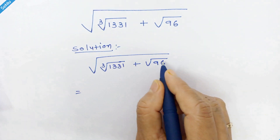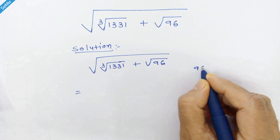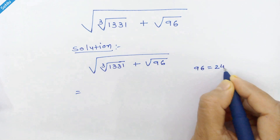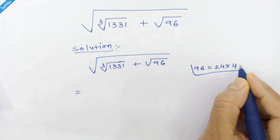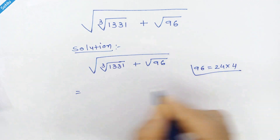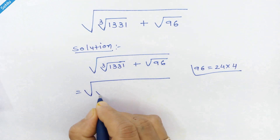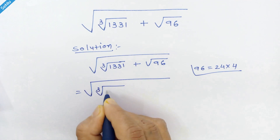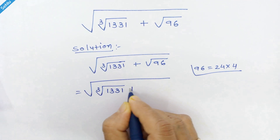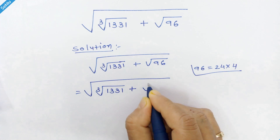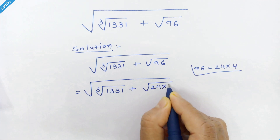First we will focus on the square root of 96. 96 is 24 times 4, so we will put this in place of 96. We have cube root of 1331 plus the square root of 24 times 4.